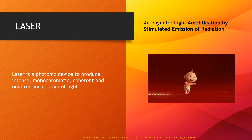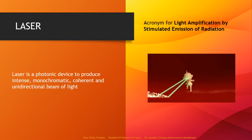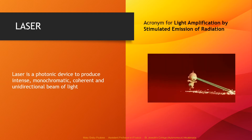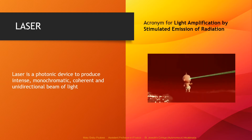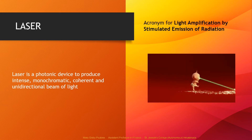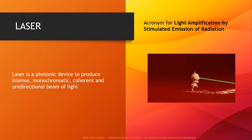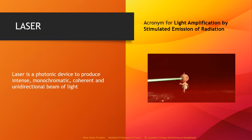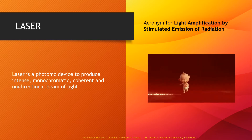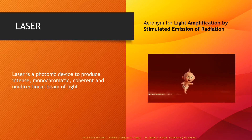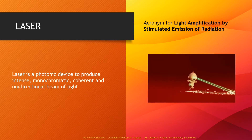We can define a laser as a photonic device to produce an intense, monochromatic, coherent and unidirectional beam of light. In this animation shown here, we know this character as Jack Jack in Incredibles 2. He was born with a lot of talents — he had power vision as one of his talents, which is very much akin to the properties of laser light.